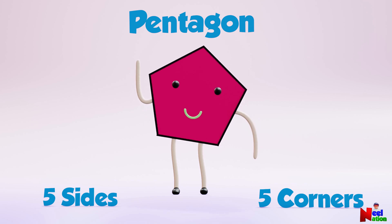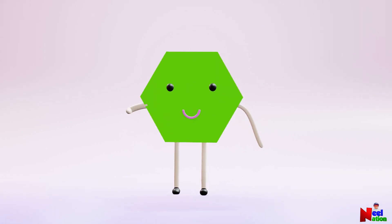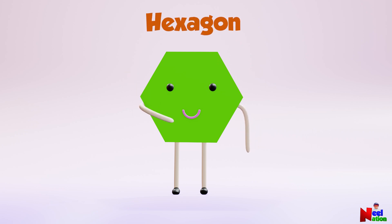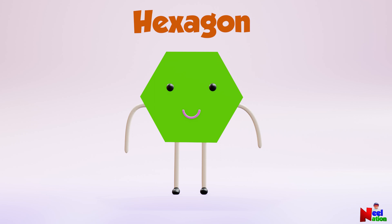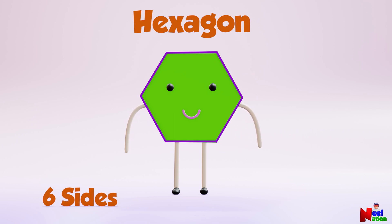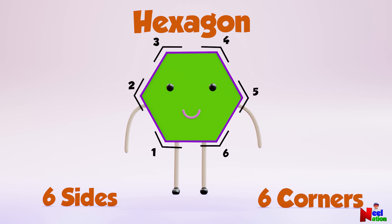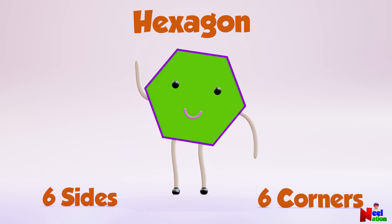Bye-bye! Hello there! I am a hexagon. I have one, two, three, four, five, six — six sides. And one, two, three, four, five, six — six corners. Bye-bye!